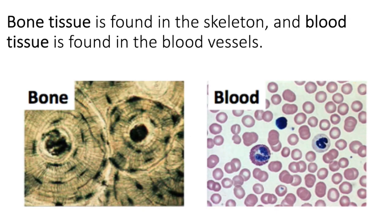Bone tissue is also a connective tissue — it certainly fits the description of a few cells contained within an abundant extracellular matrix. We find bone in the skeleton of our bodies. Blood tissue is also a connective tissue; in this case it's a fluid connective tissue. Bone is a solid, blood is a fluid. Blood is contained within your blood vessels, circulates through your body, and distributes cells, nutrients, and waste throughout your body tissues.